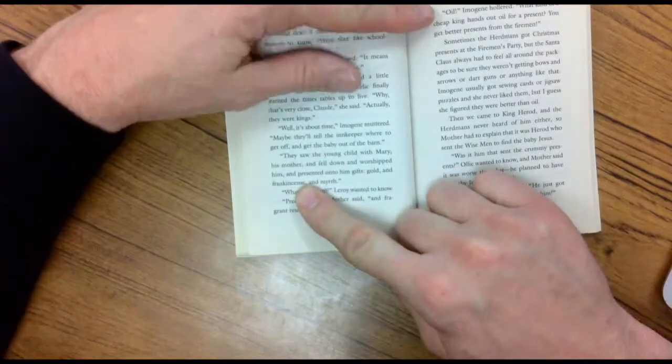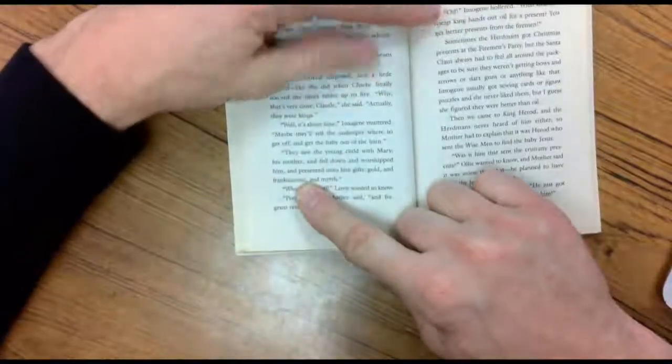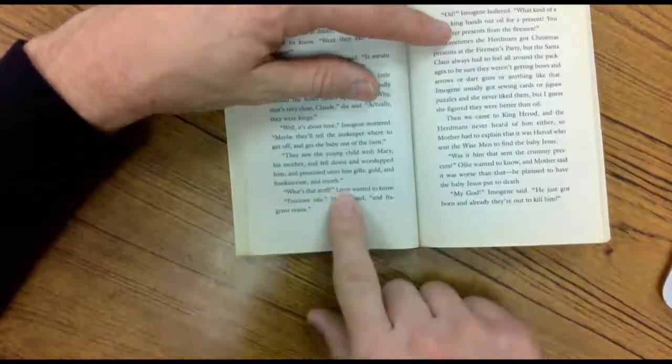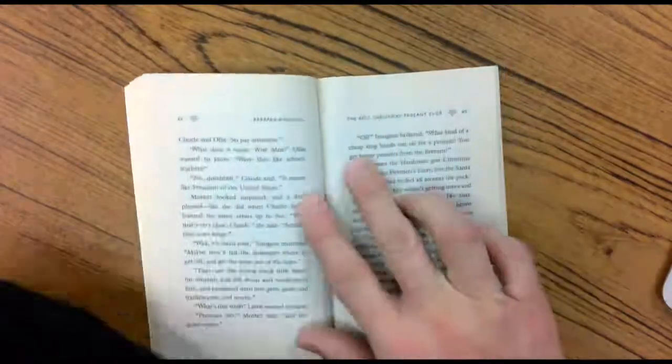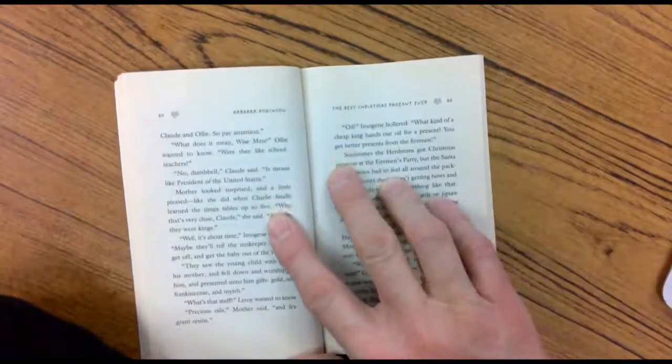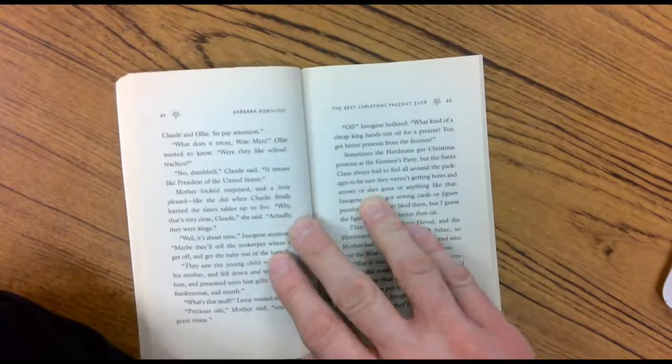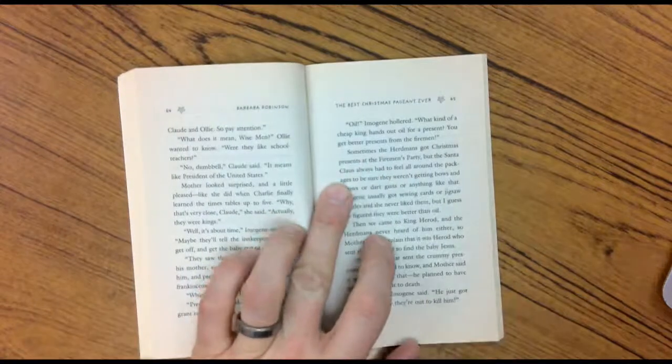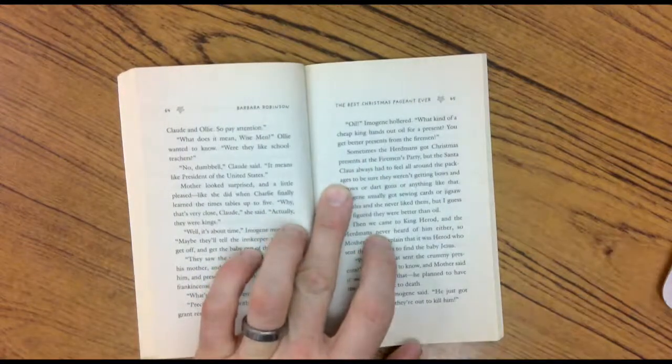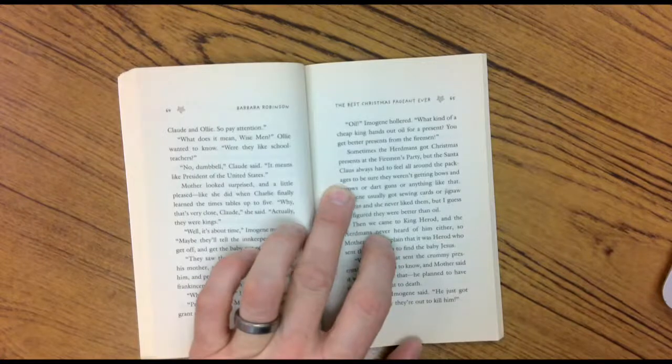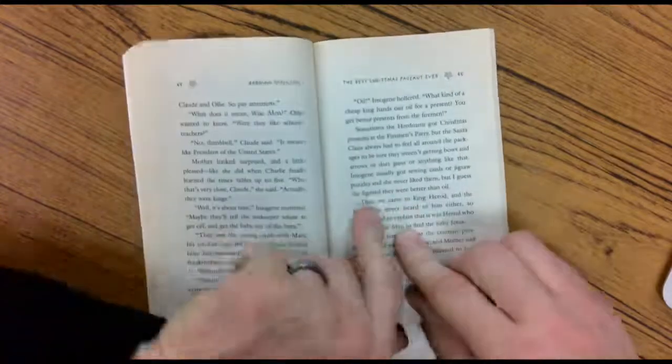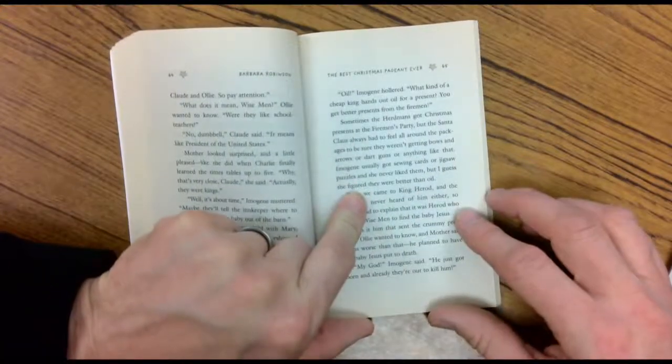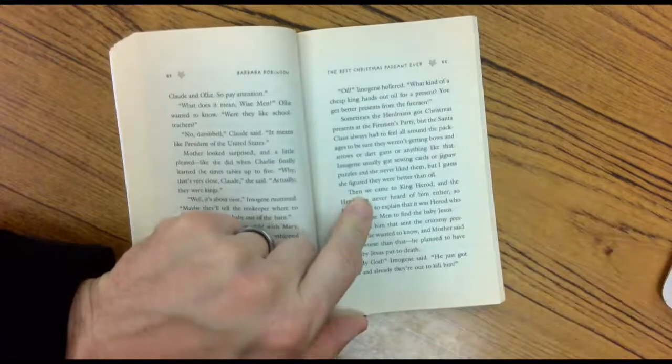They saw the young child with Mary, his mother, and fell down and worshipped him and presented him with gifts of gold and frankincense and myrrh. You probably already know what's going to happen now. They're going to be like, What are those things? Because they sound kind of crazy. What's that stuff? Leroy wanted to know. Precious oils, mother said. And fragrant resins. Now, resins is like lotions. Oil, Imogene hollered. What kind of cheap king hands out oil for presents? You get better presents from the firemen. Sometimes the Hermanns got Christmas presents at the firemen's party. But the Santa Claus always had to feel around the package to make sure they weren't getting bows and arrows or dart guns or anything like that. Imogene always got sewing cards or jigsaw puzzles and she never liked them. But I guess she figured they were better than oils.